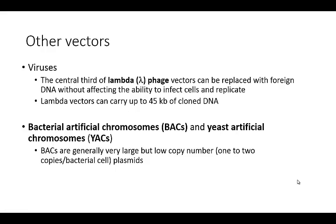There are other vectors that are useful as well. Viruses are one example — lambda phage is a virus that infects bacteria such as E. coli and can carry quite a bit of cloned DNA, up to 45 kilobases. Plasmids are much smaller; you can usually clone in maybe 1 to 2 kb, max. There are also bacterial artificial chromosomes (BACs) and yeast artificial chromosomes (YACs), which can be very large but have very low copy numbers — perhaps only one to two copies per bacterial or yeast cell. Plasmids, even low-copy ones, may have around 100 copies per cell, with high-copy ones reaching up to 1,000 copies per cell.